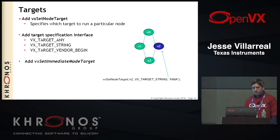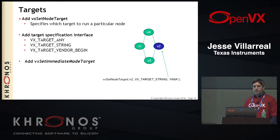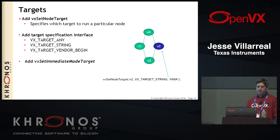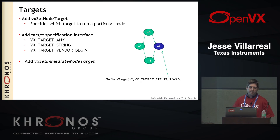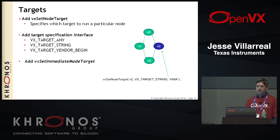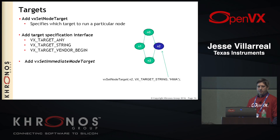Another thing that's very useful is the idea of targets. In 1.1 we have a standardized function which is set node target. You can decide, given the implementation you have, to set a particular node to execute on a particular target — a DSP, a hardware accelerator, or a GPU. Not every implementation is going to have these targets. So we can't standardize what targets are going to be programmed through this function — you can specify through a vendor extension or through a string, which is also a vendor extension. This part is portable in that we can use the same function to specify targets, but the target you choose is not going to be portable.